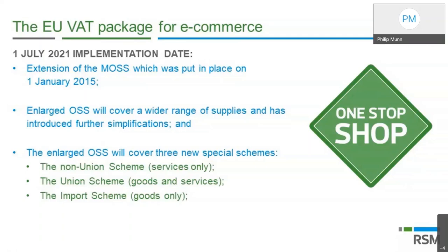Second, for EU organizations, the distance selling regime will come to an end. Previously, a UK business would be obliged to start charging local VAT once it breached a particular threshold. That distance selling regime will be replaced by a One-Stop Shop system encompassing all goods and services. There is a threshold for micro-businesses, but unfortunately it is only €10,000. If your EU business sells goods and services across the EU above that threshold, the new Union Scheme will apply and local VAT will become due.